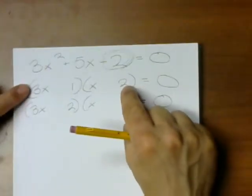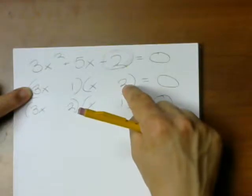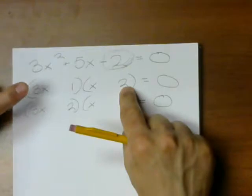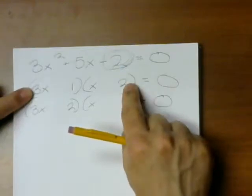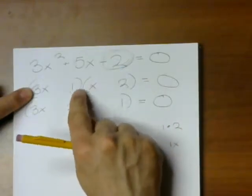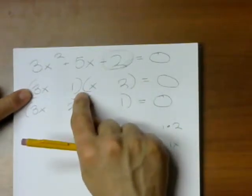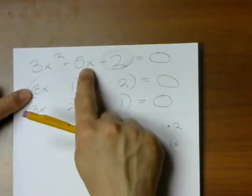For instance, if I have this first possibility, and I want to examine this, the 3x times a 2 is going to give me a 6x, and this is going to give me a 1x. So I'll have a 6 and a 1. Is it possible to use a 6 and a 1 to make a 5?